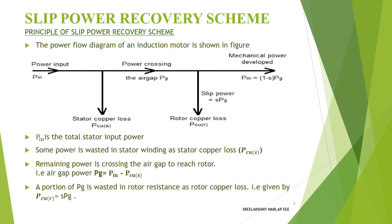After crossing the air gap, mechanical power developed PM is equal to (1 − S)·PG, which is PG minus S·PG. In this power flow diagram: P_in is total stator input power; some power is wasted in stator winding as stator copper loss P_CUS; remaining power crosses the air gap to reach the rotor — that is, air gap power PG equals P_input minus P_copper_loss. A portion of PG is wasted in rotor resistance as rotor copper loss, given by P_CU_rotor = S·PG.